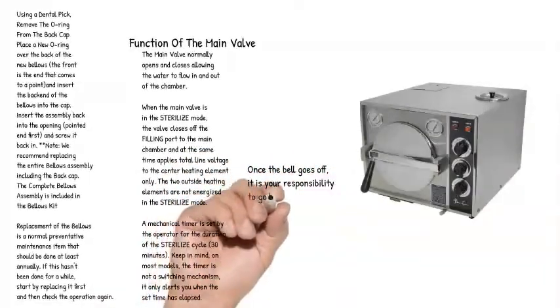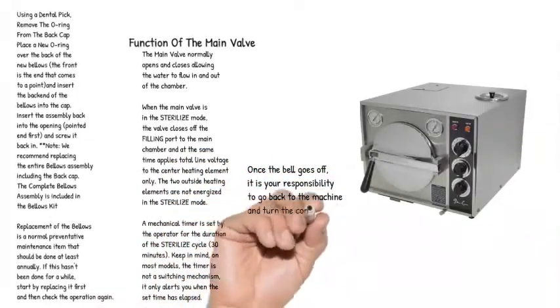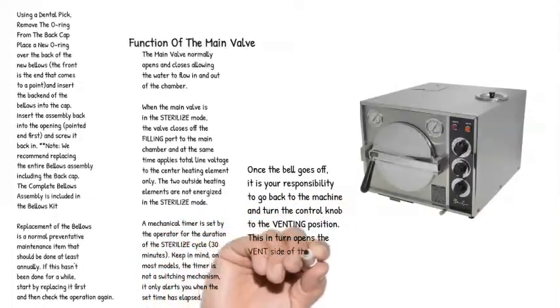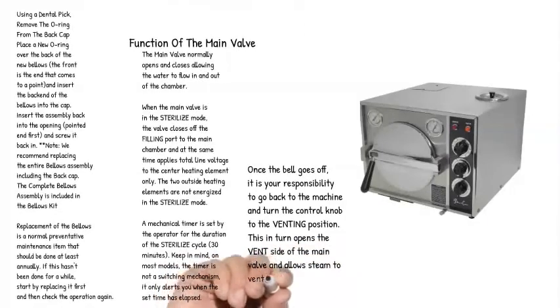Once the bell goes off, it is your responsibility to go back to the machine and turn the control knob to the venting position. This in turn opens the vent side of the main valve and allows steam to vent back into the water reservoir.